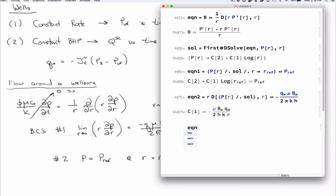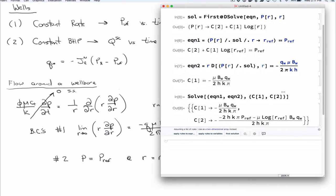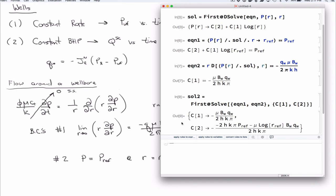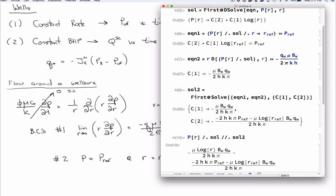Okay, so then I can just solve these guys. So now we'll solve a linear system of equations. Solve equation 1, equation 2 for C1 and C2. The first just gets rid of that extra set of parentheses. So then finally I can say that P R slash dot solve slash dot solve 2 is my solution.